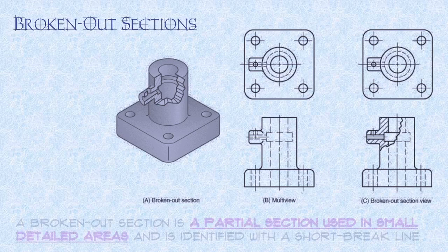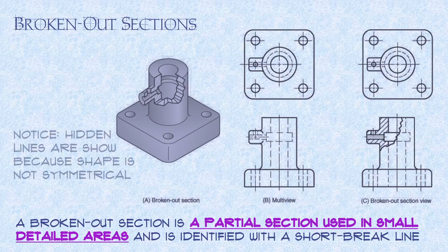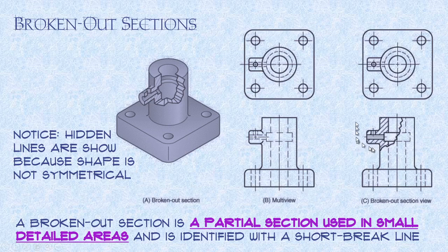Then we have what we call broken out sections. A broken out section is just a partial section used in small detailed areas. So I don't want to go through and create a whole big section view of a part. All I need to do is to show the internal detail in a small location. We just do a broken out view. So we use a short break line. All this is doing is identifying, hey, we broke off this section here so we can see the internal detail here, but the rest of it is shown as a normal front view.